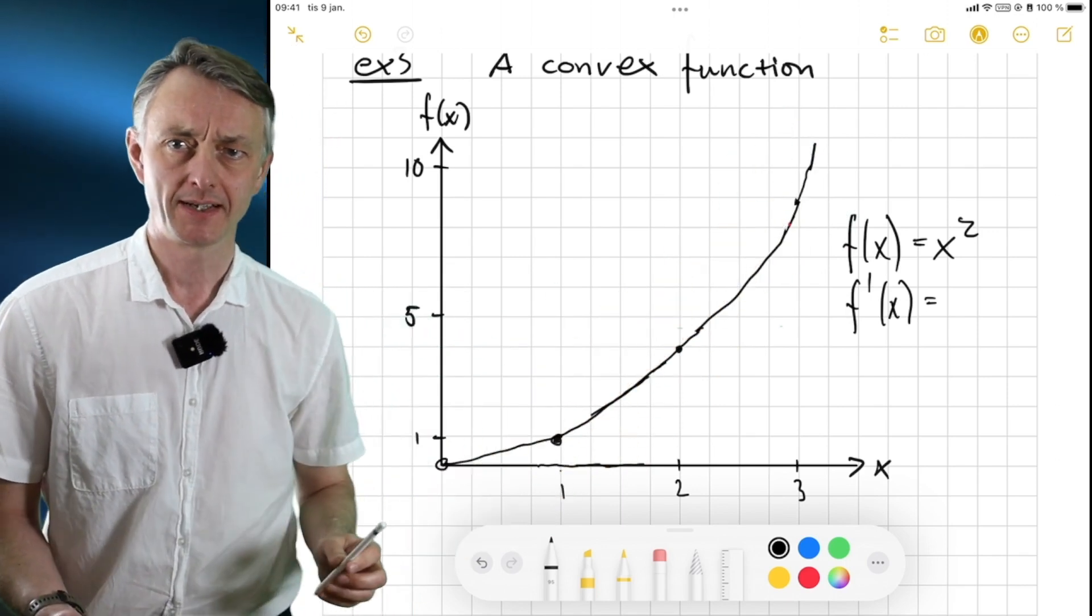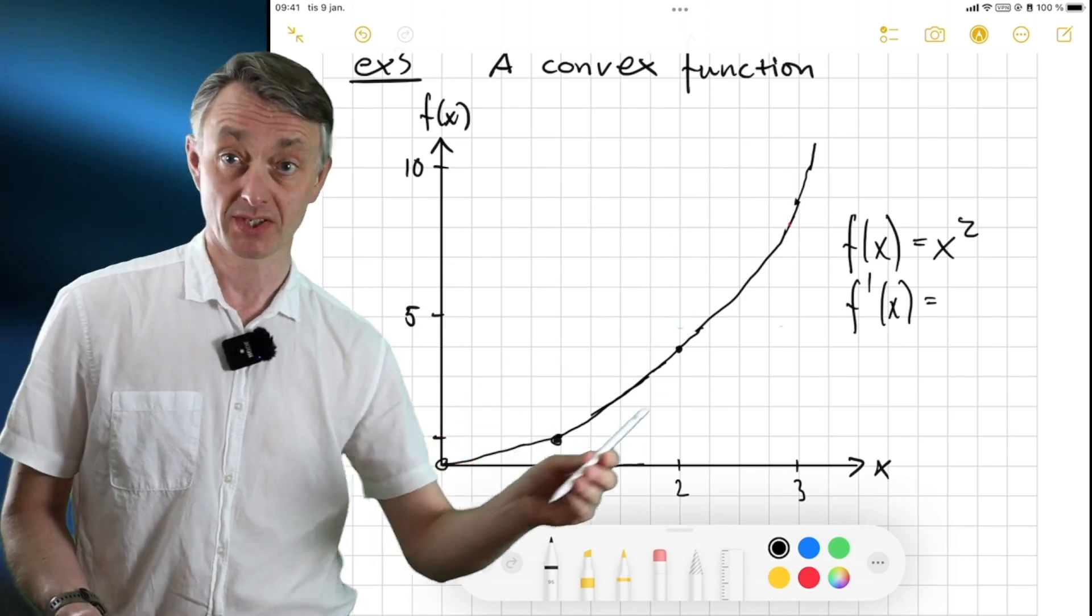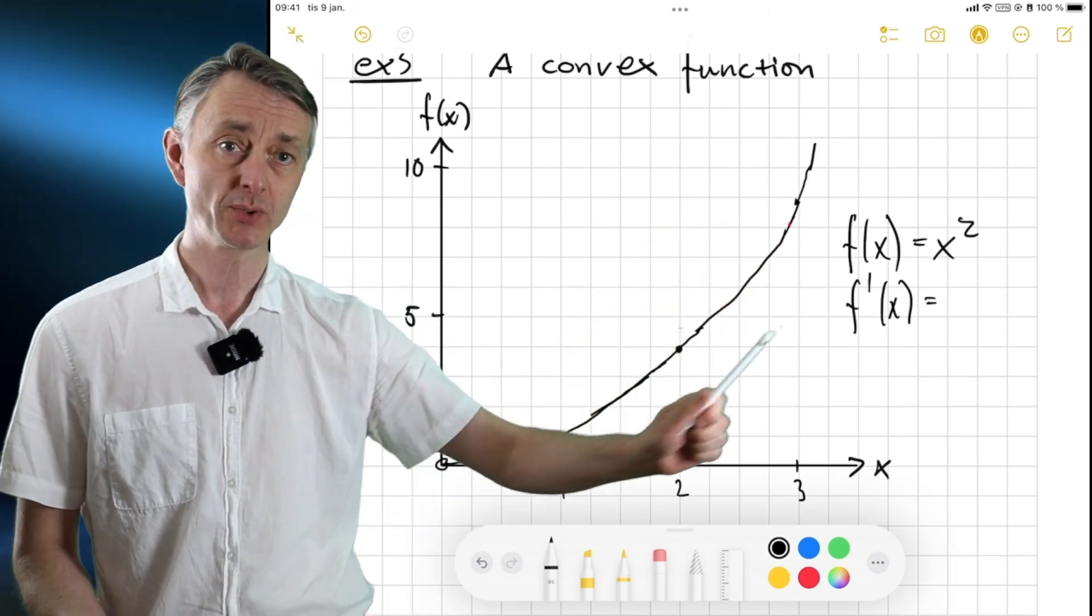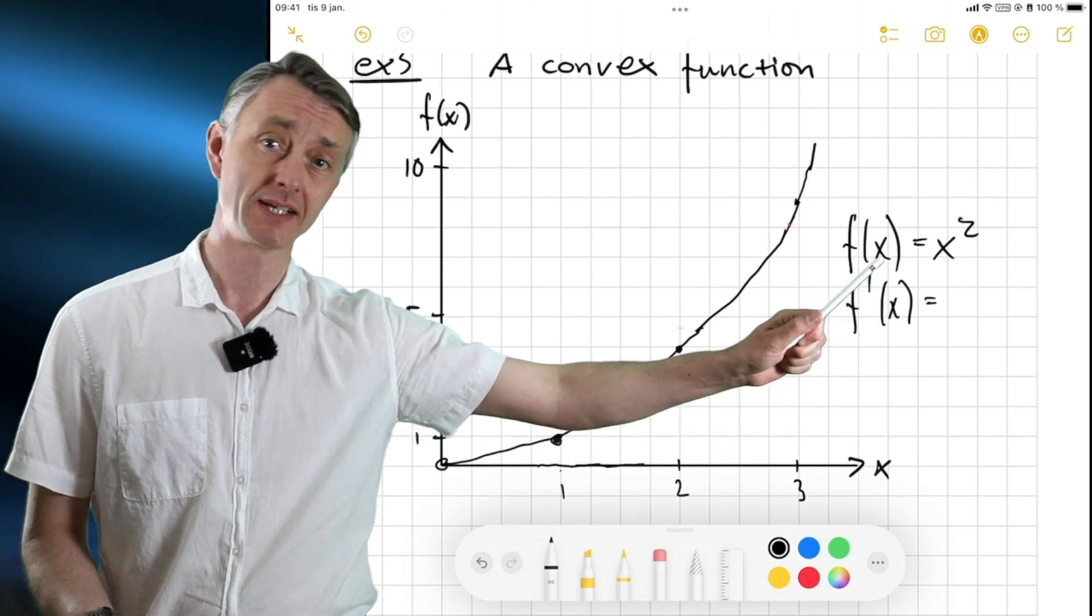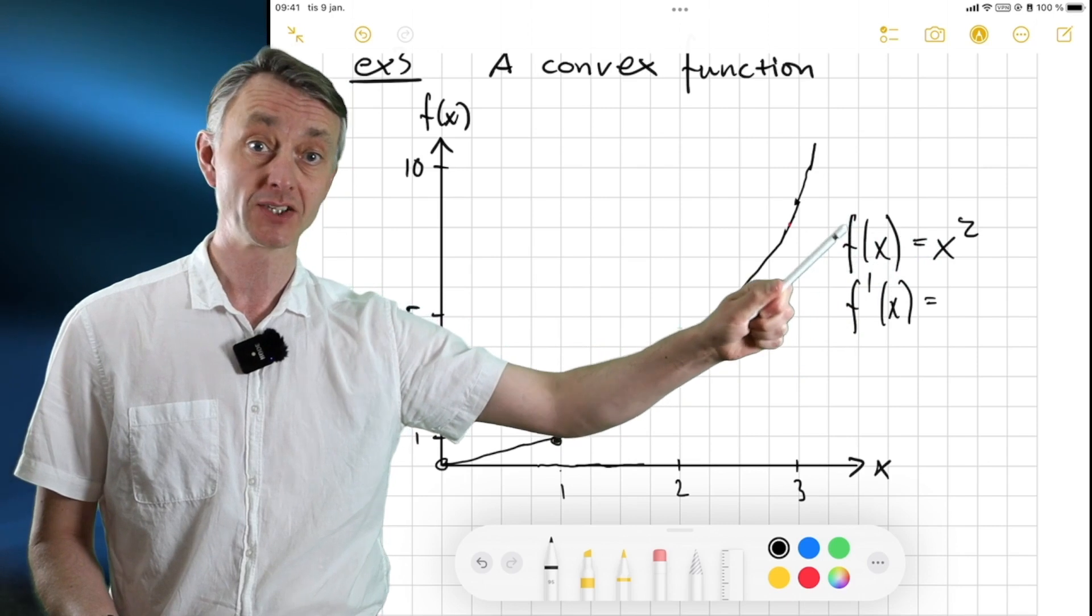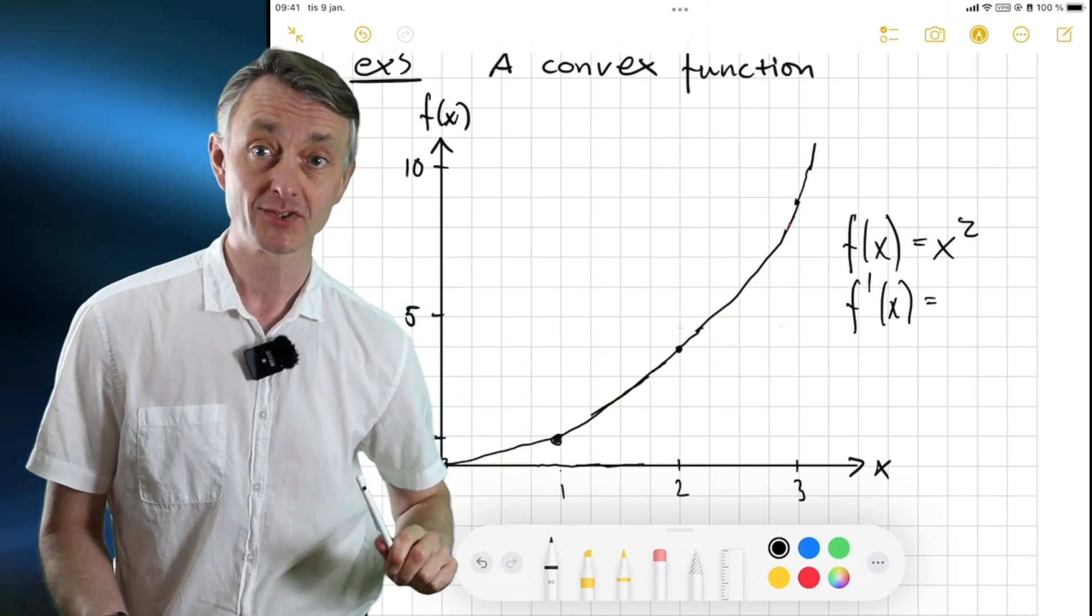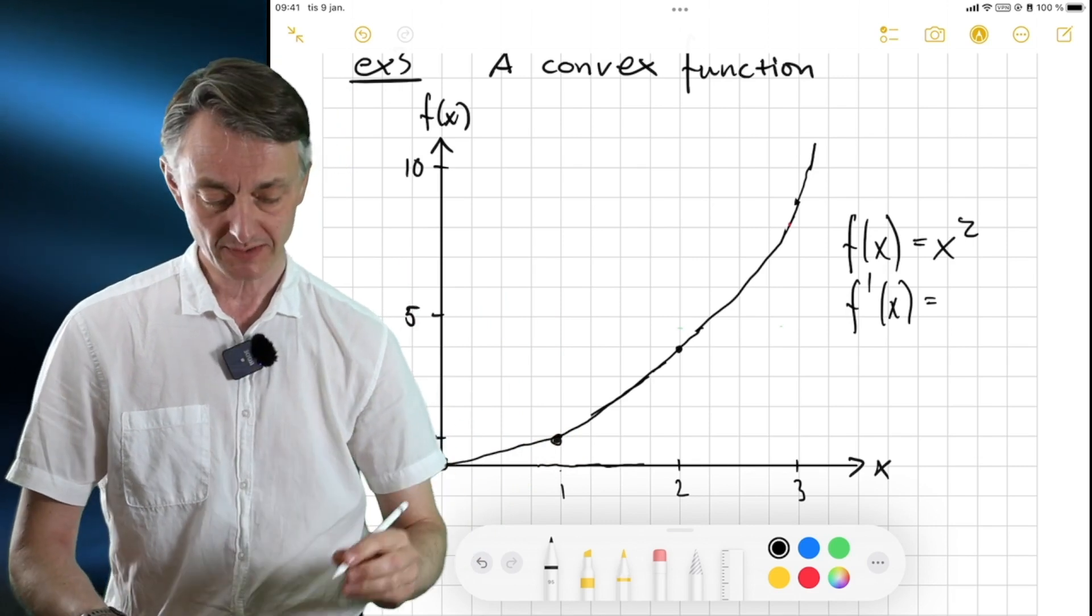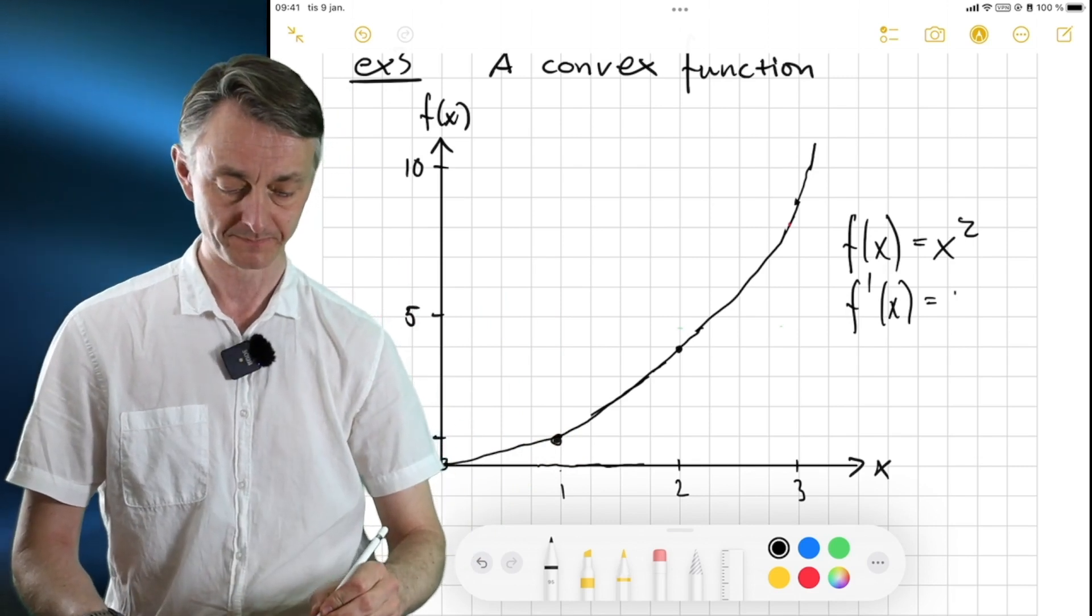Well, we can quickly compute this by taking the derivative of this function with respect to x. So, how much does the value of the function change when we change the value of x a very small bit? Well, it's going to be 2x. Because this is a derivative.